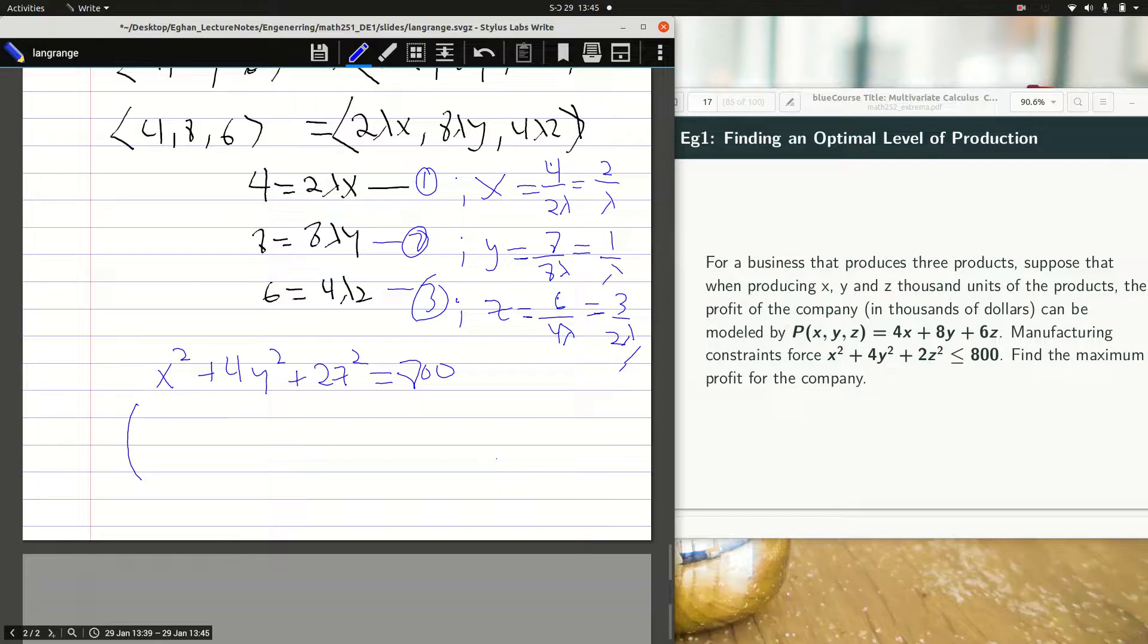The first term I get is 2 over lambda all squared. For here, 1 over lambda all squared plus 2 times 3 over 2 lambda all squared is equal to 800. So you take your time and do the expansion from here.